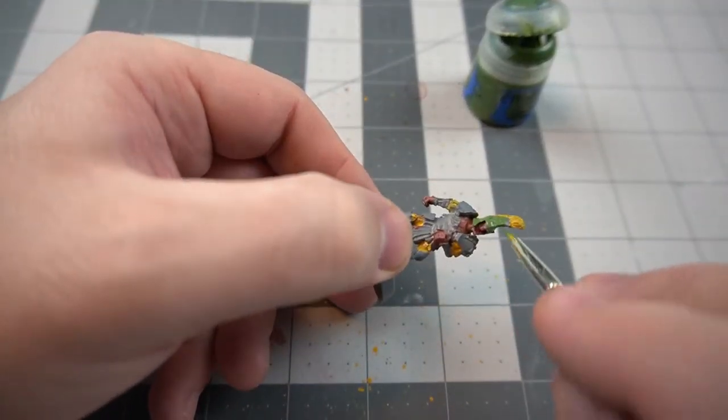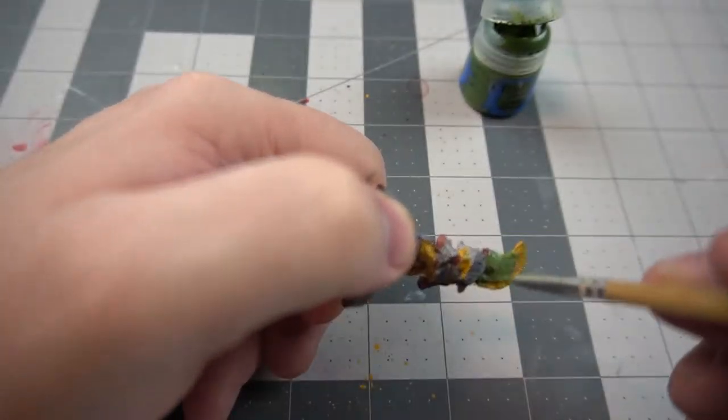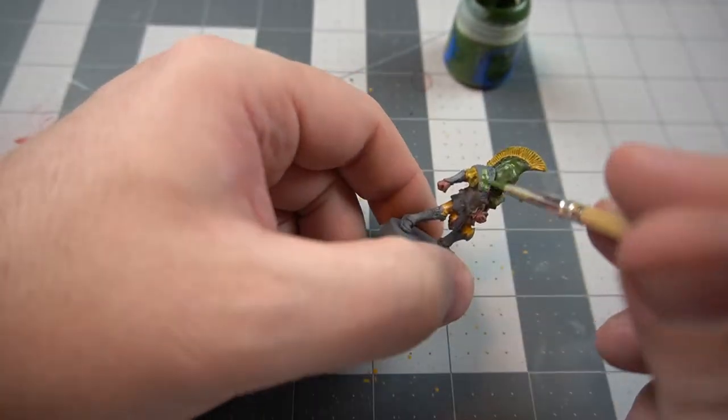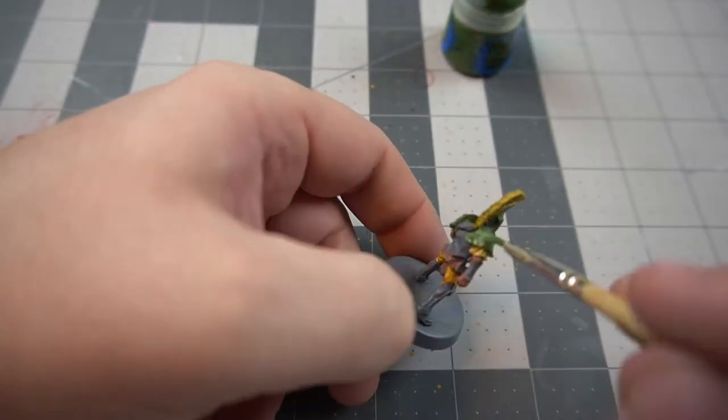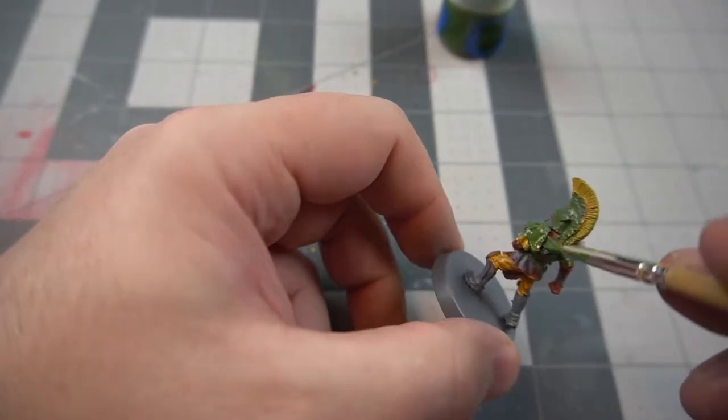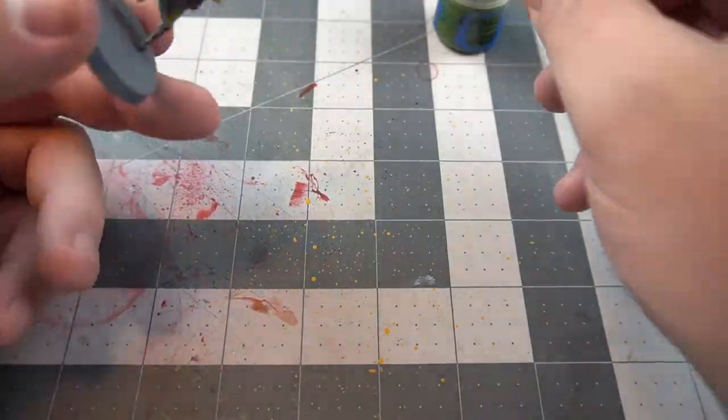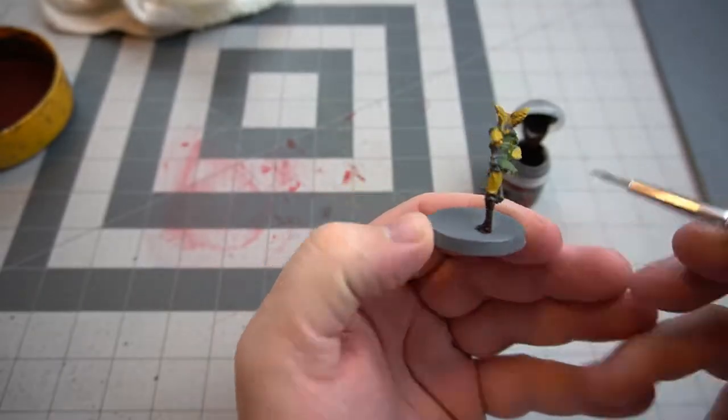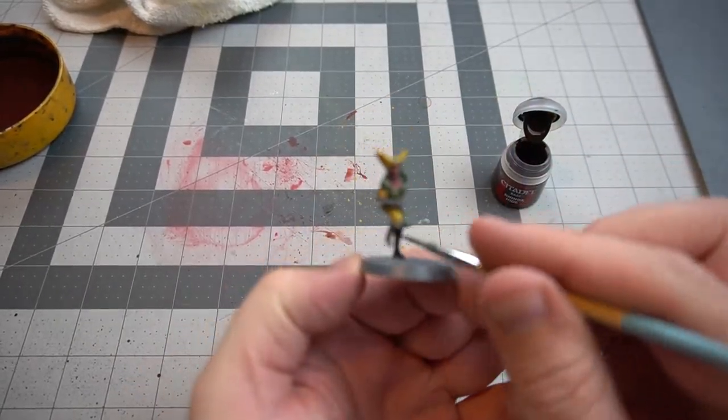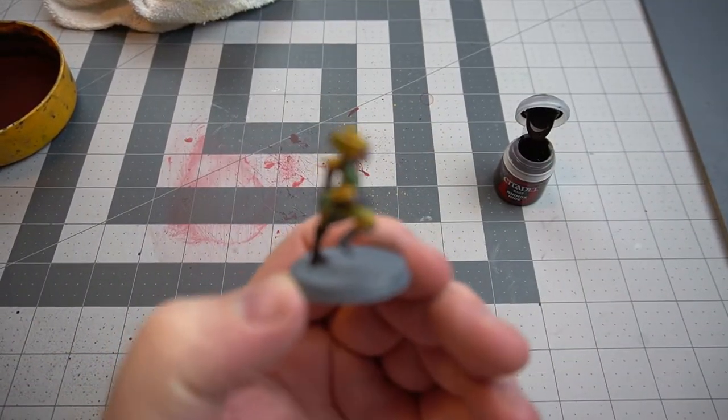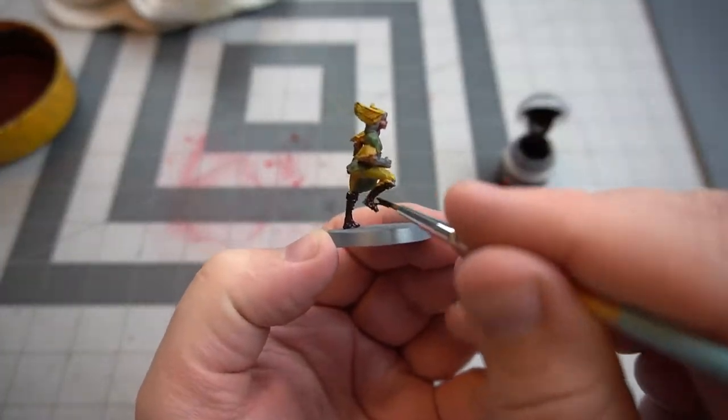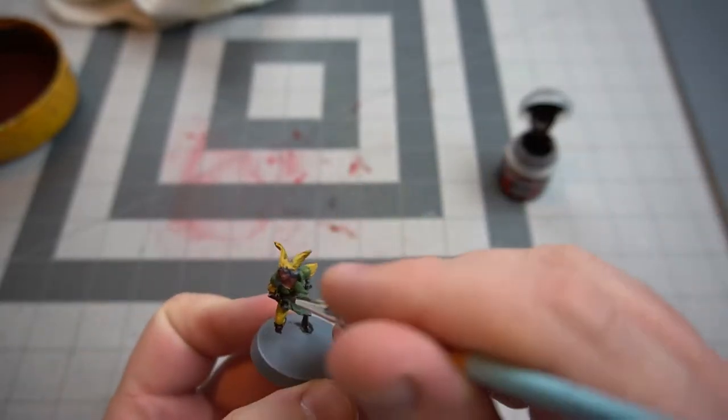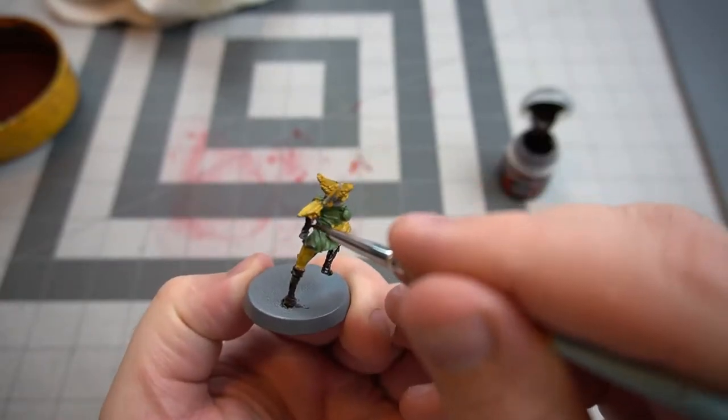Moving on to green and I'm going to go to a darker richer green after this later. I'm doing a dark brown on the boots and the gloves and other leather bits.